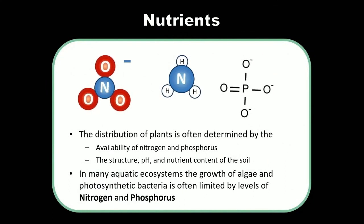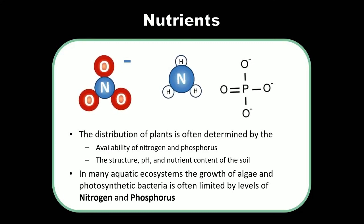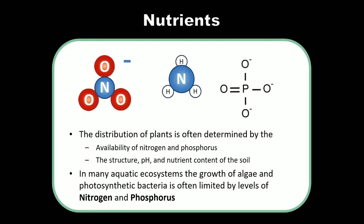The availability of nutrients is another abiotic component of the environment. Nutrients like nitrate, ammonia, and phosphate — the same ingredients found in fertilizer mixes at a hardware store — are important. The distribution of plants is often determined by the availability of nitrogen and phosphorus in the soil. In many aquatic ecosystems, growth of algae and photosynthetic bacteria is limited by the amount of nitrogen and phosphorus available. If those nutrients enter such ecosystems, bacterial or algal growth skyrockets, producing what we call bacterial blooms, which can be very bad for an ecosystem.